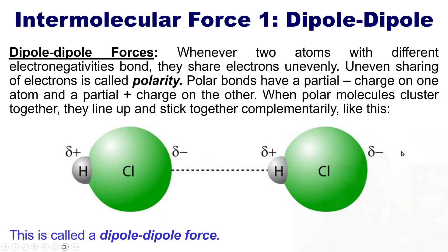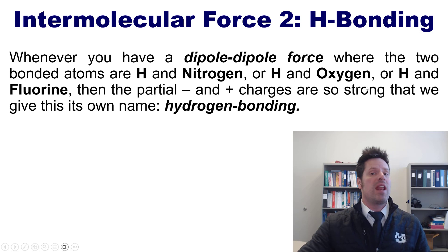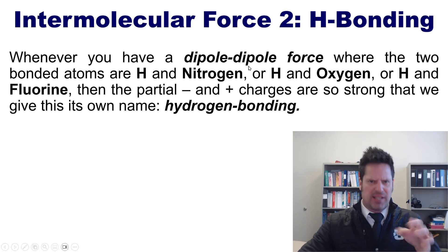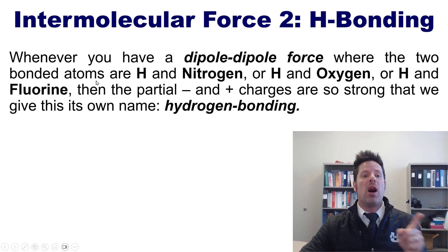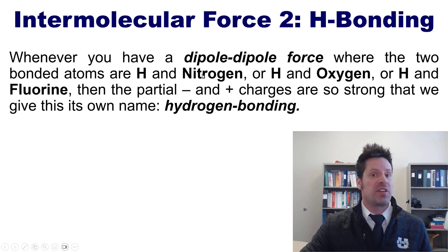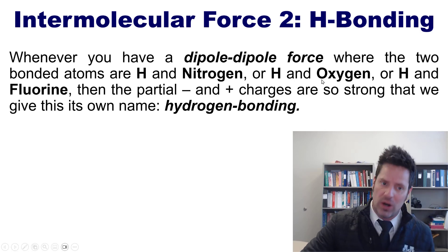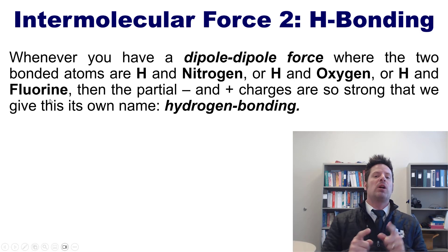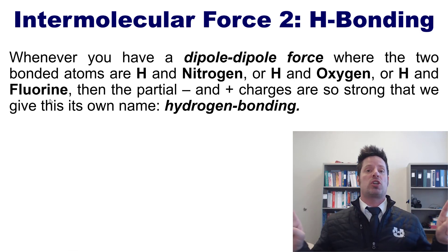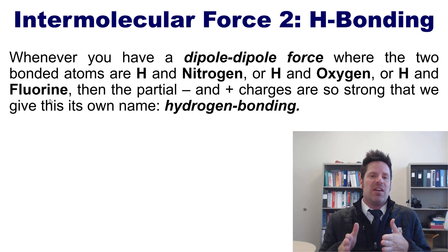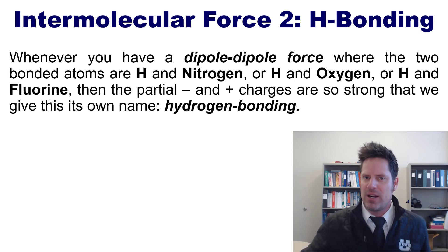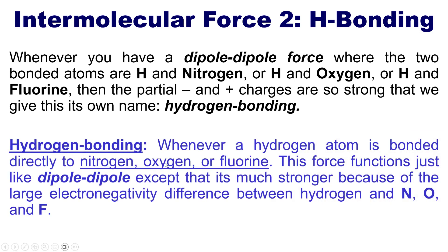That segues beautifully into force number two: hydrogen bonding. Whenever you have a dipole-dipole force where the two bonded atoms are hydrogen with nitrogen, hydrogen with oxygen, or hydrogen with fluorine, then the partial minus and positive charges are so strong that we give this category its own name: hydrogen bonding. Hydrogen bonding occurs whenever a hydrogen atom is directly bonded to nitrogen, oxygen, or fluorine — the three most electronegative elements.